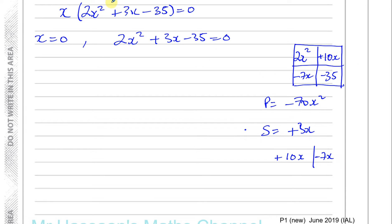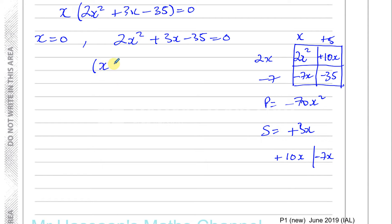Now I take out the common factor from each pair of terms. From 2x squared and 10x, the common factor is 2x. From minus 7x squared and minus 35, the common factor is x. Then I find what 2x must be multiplied by to give 10x — that's plus 5 — and what gives minus 7x — that's minus 7. So the two factors are (x plus 5) and (2x minus 7).